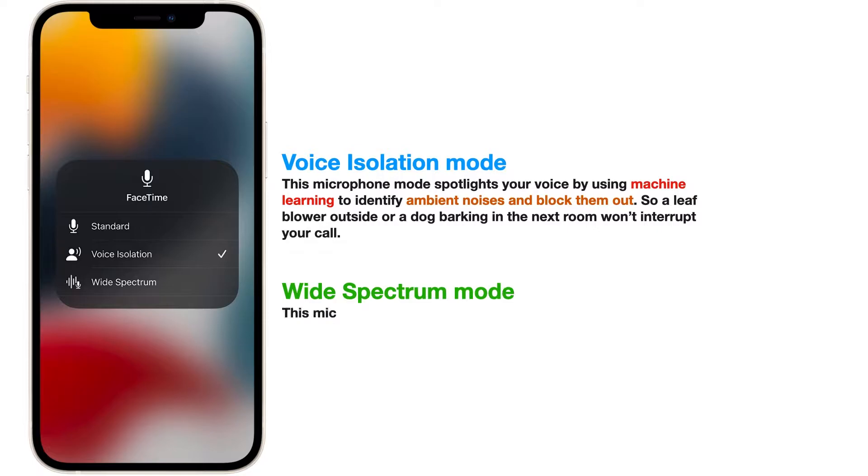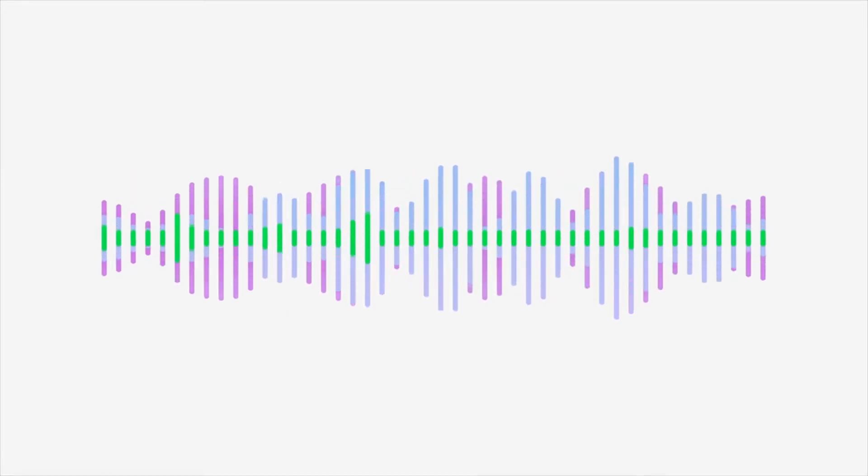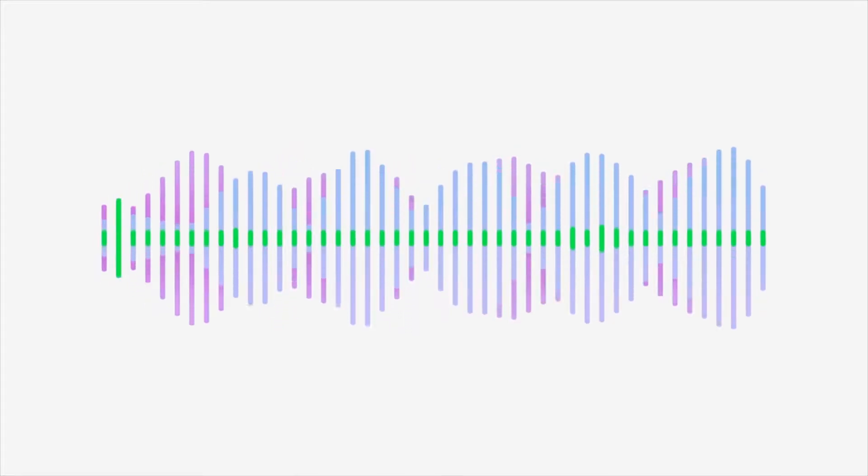الميزة التانية هي عكس الأولانية وهي حاجة اسمها Wide Spectrum. أحياناً بنكون محتاجين وأحنا بنعمل مكالمات الفيس تايم إن الصوت اللي حوالينا كله يكون مسموع، وإن المايكروفون يلتقط كل الصوت حواليك. مثلاً لو أنت بتكلم حد وبتسمع music وعايزه يسمع معك الميوزيك، فال Wide Spectrum هتجمع لك كل الأصوات اللي موجودة معك.